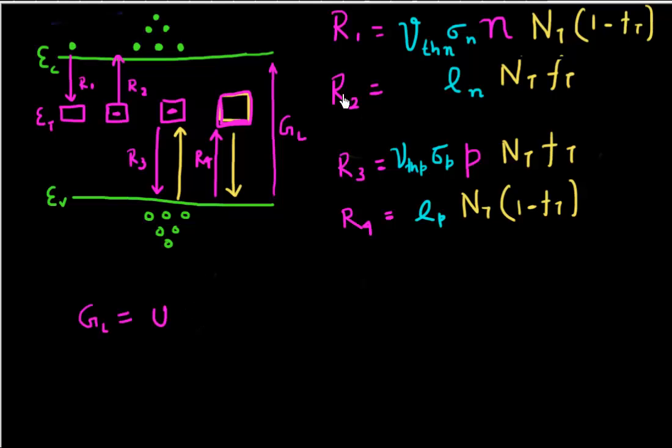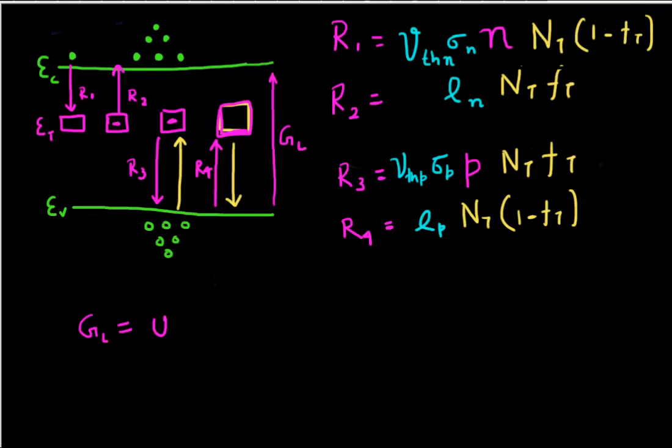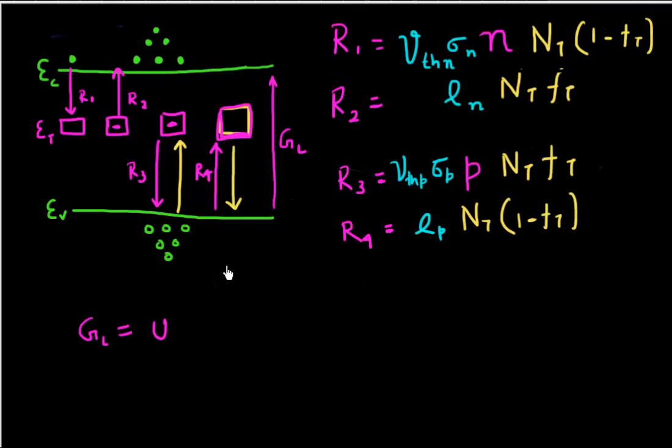So my net generation rate has to be matched by my net recombination rate. And I can denote this net recombination rate by the symbol U. And looking at these individual rates of generation of capture and emission of electrons, I can say this net recombination rate should, if I consider the case of electrons, should be equal to the rate at which I am trapping into the trap, subtracted by the rate at which these electrons are being detrapped.